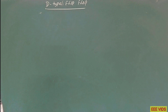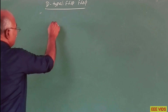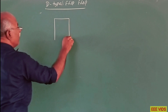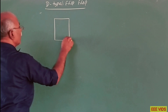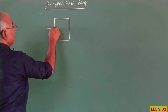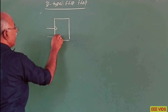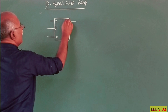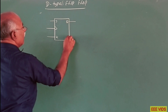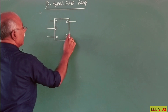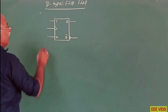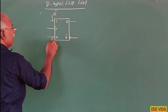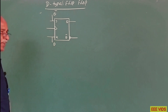D-type flip-flop. The J-K flip-flop is already shown in the block diagram. This is the clock pulse, K input, J input, output Q, complement output Q bar. Here we are going to use the Q bar feedback.